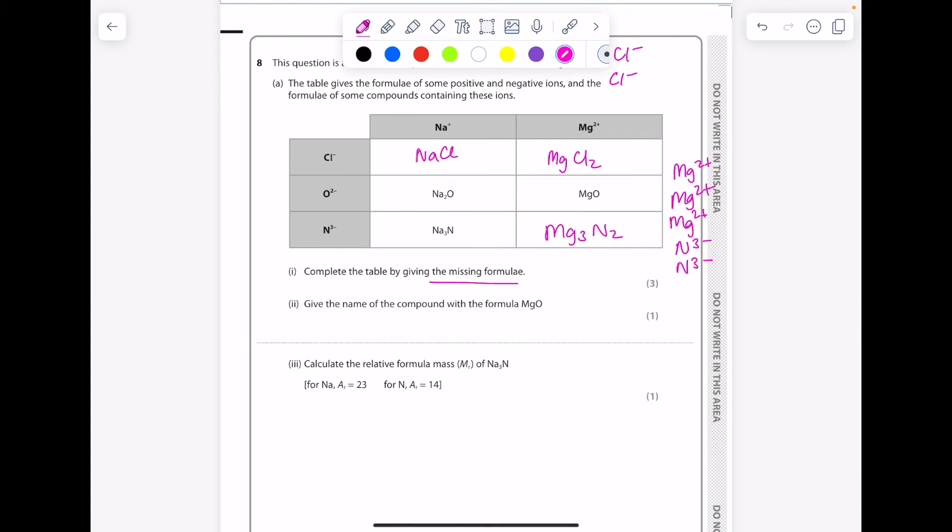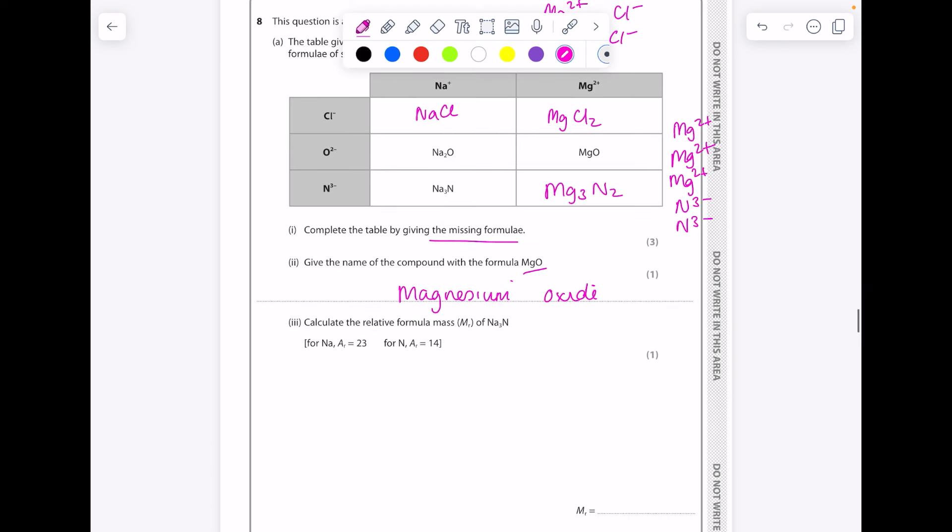Give the name of the compound with the formula MgO. That's just magnesium oxide. Calculate the MR of Na3N. So we do 3 lots of sodium plus 14 to get 83.